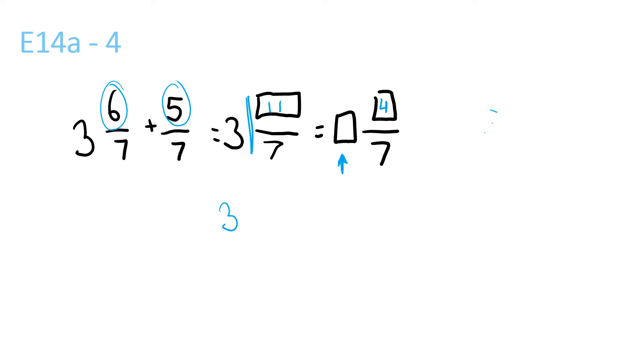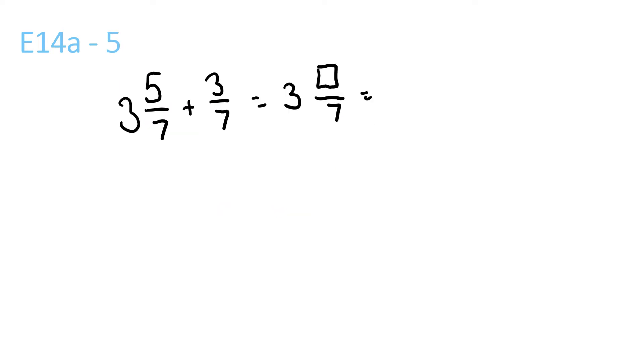Now do 3 because of here, and then 1 because of the 1 and 4/7. If 3 plus 1 is 4, so 4 goes there. That's 8, because 5 plus 3 is 8. Now it will be 4 and 1/7.